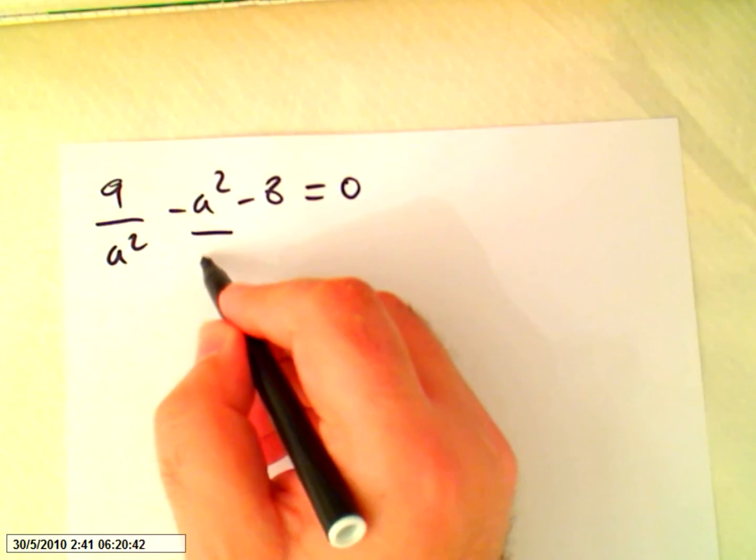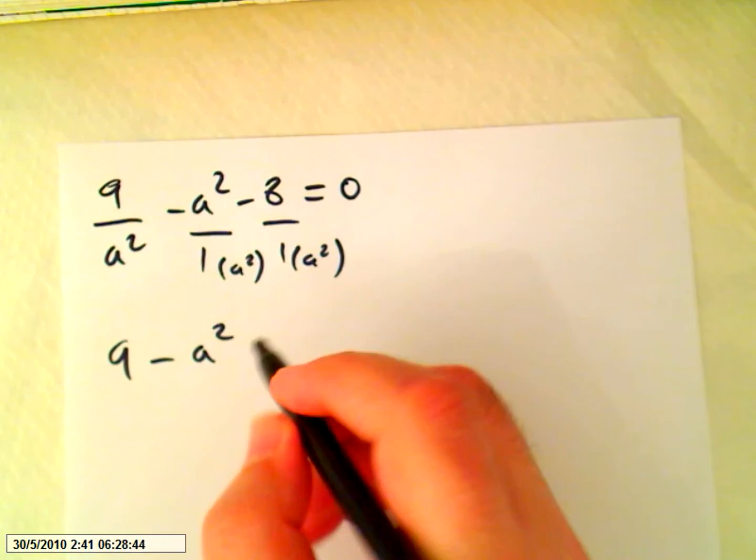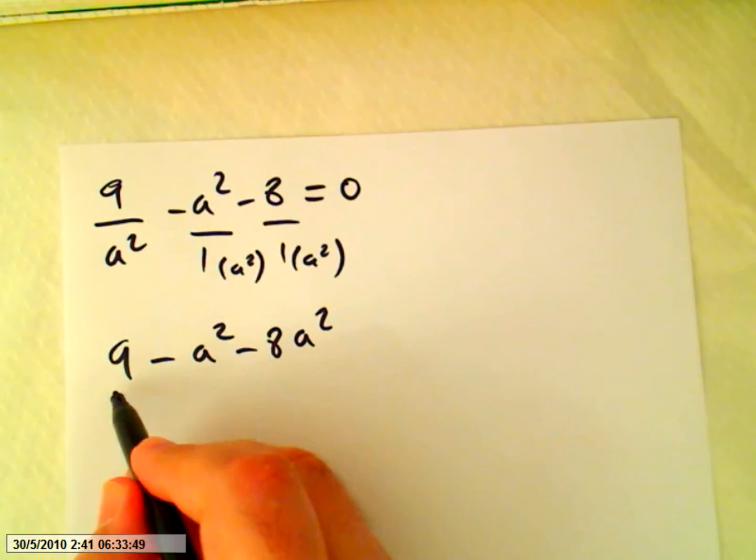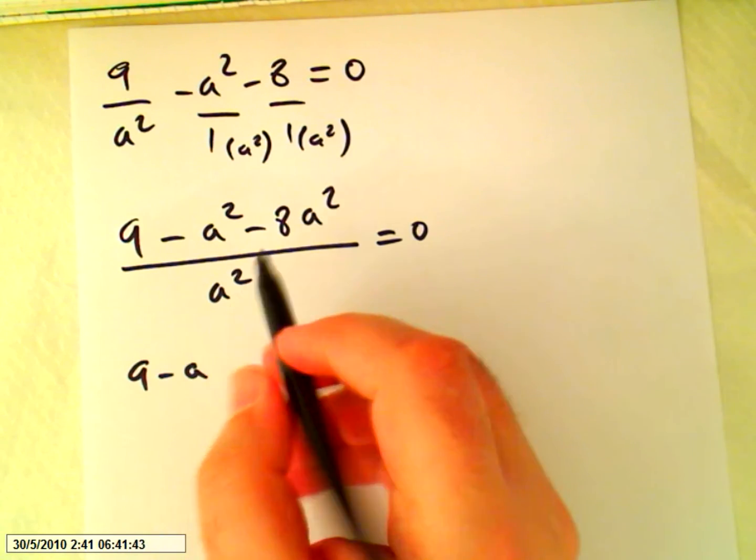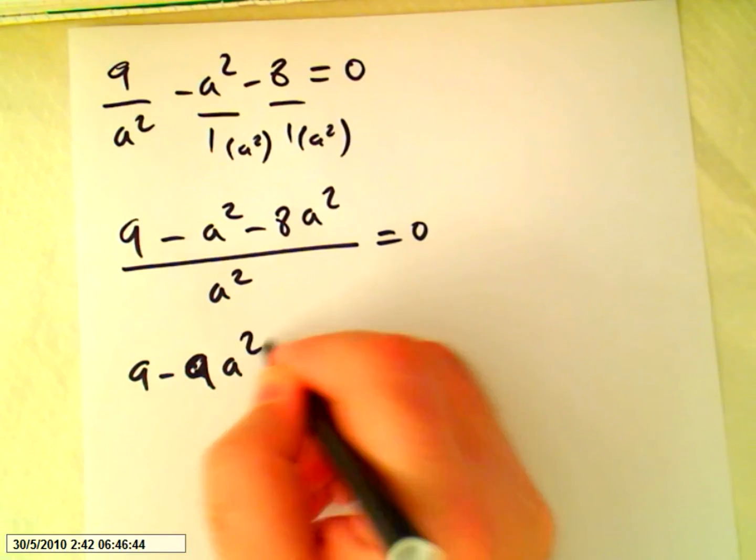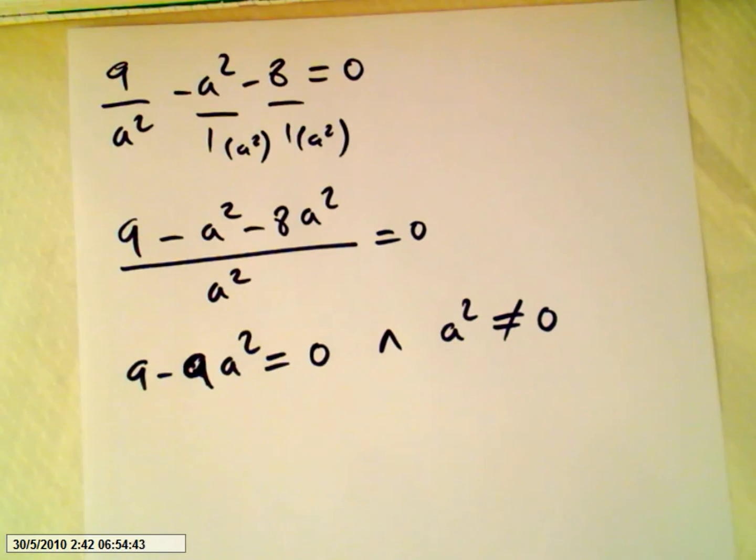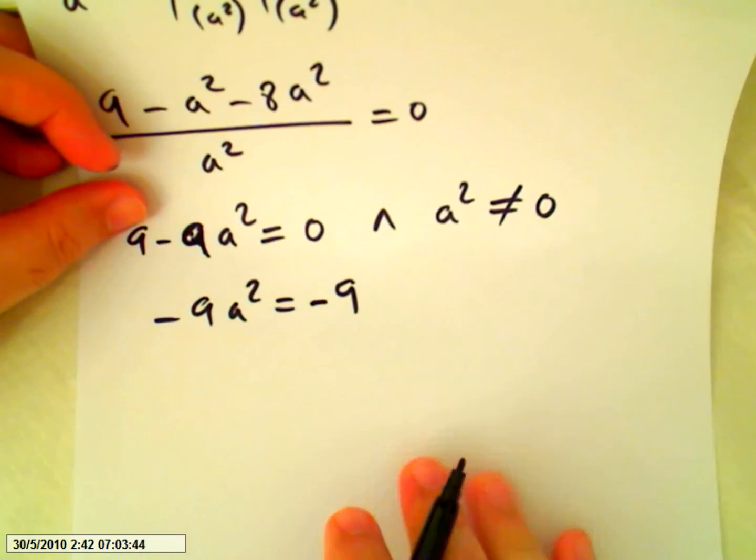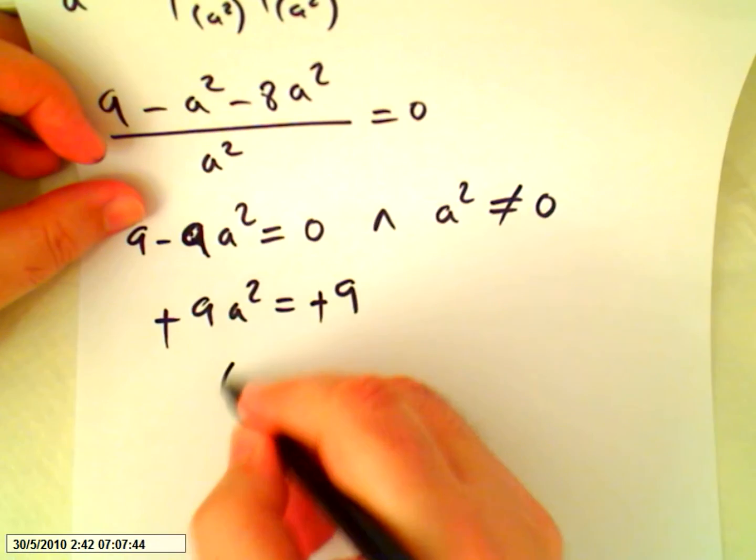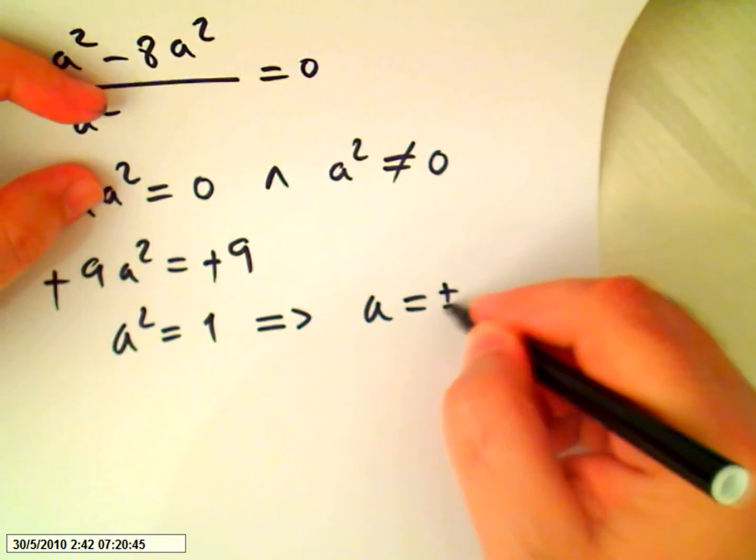Which is the same as multiplying this one by a squared and this one by a squared. We will get 9 minus a to the 4 minus 8 a squared over a squared equals 0. And this is, so minus 1 minus 8 will be minus 9. Minus 9 a squared equals 0, and a squared has to be different. So we get a squared equals 1, and that implies a equals plus or minus 1.